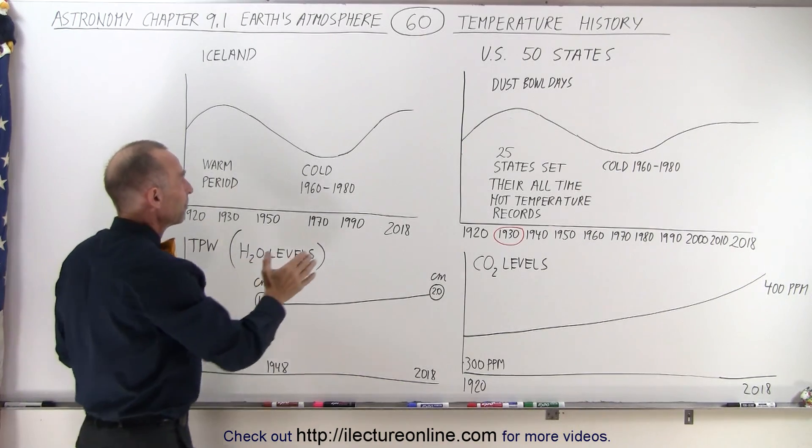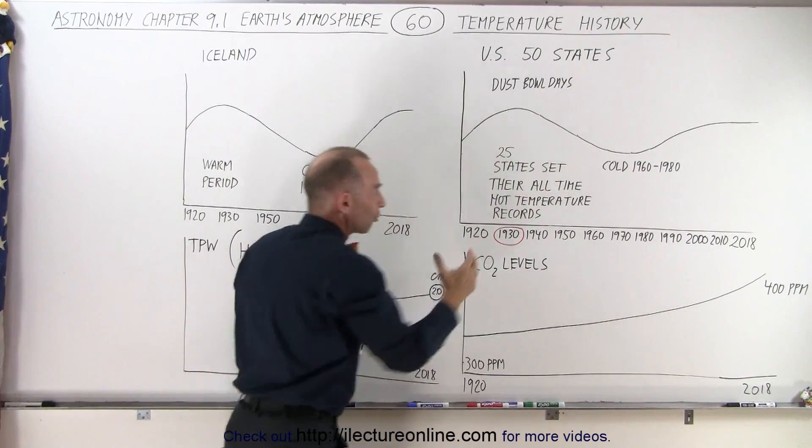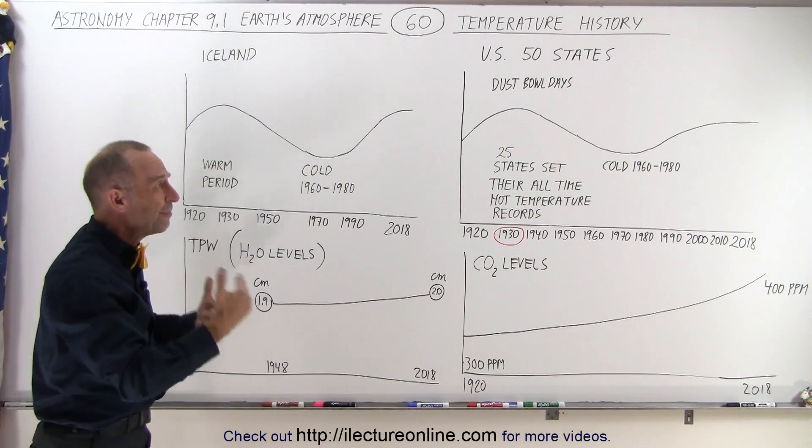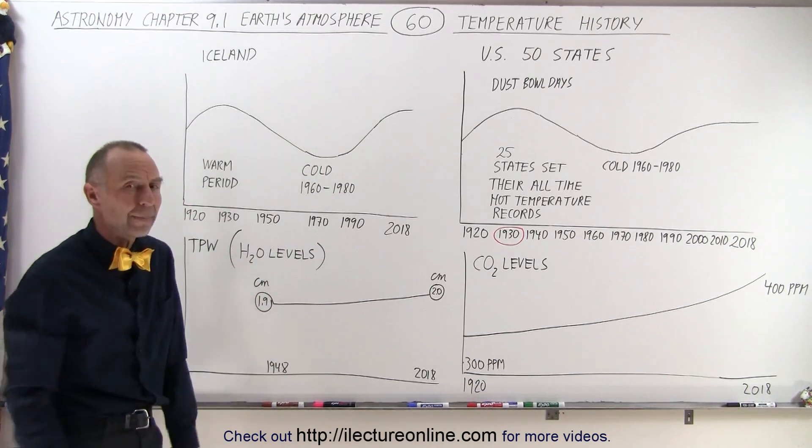However, if we compare today's temperatures to the 1930s in countries with good temperature records, there doesn't appear to be any significant increase that could be attributed to what's happening in the atmosphere.